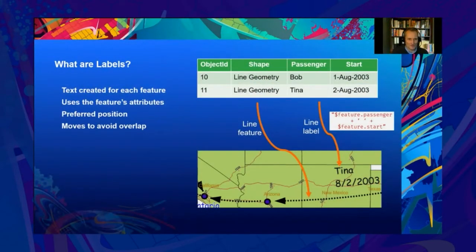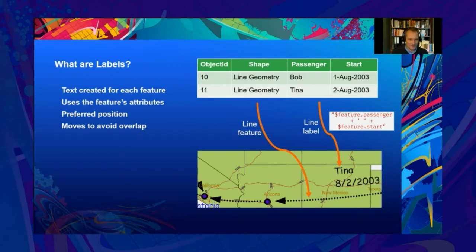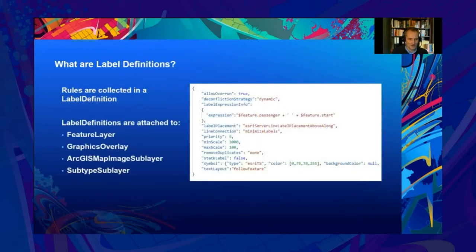What are labels? How do they differ from annotation or other text graphics? Labels are text information displayed on the map or scene, but they are created dynamically on the fly based on the feature attributes. This is analogous to symbology being created and positioned for features based on their shape geometry attribute. Labels are positioned on or near their feature according to the author's preferences, but can also dynamically move to avoid overlapping other labels or important features. The instructions for how to create each label and what the position preferences are, are described in a label definition.